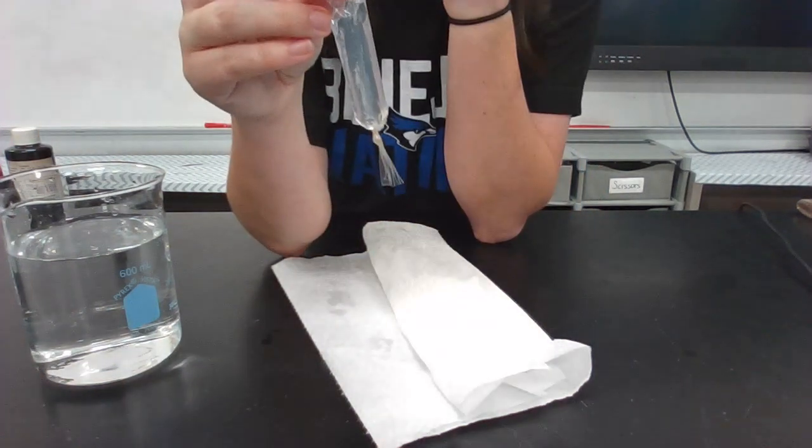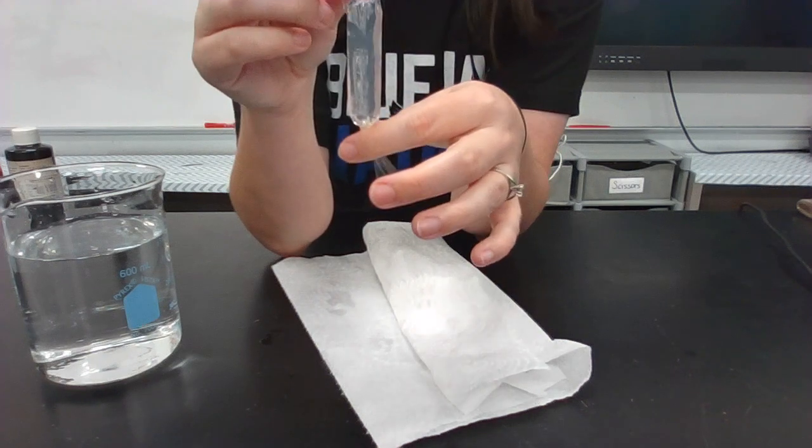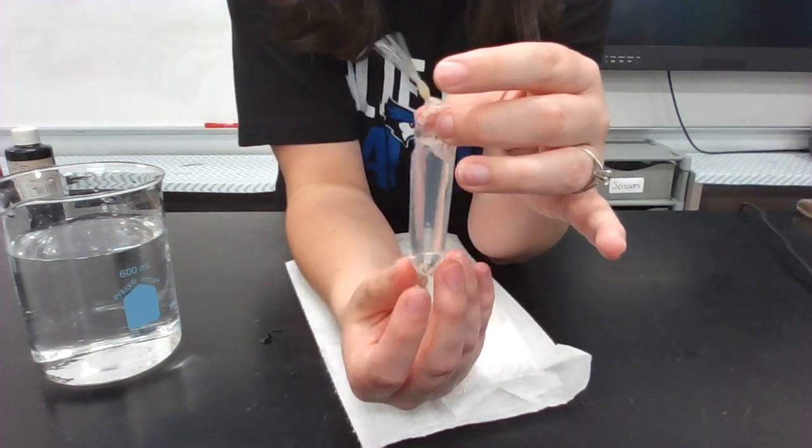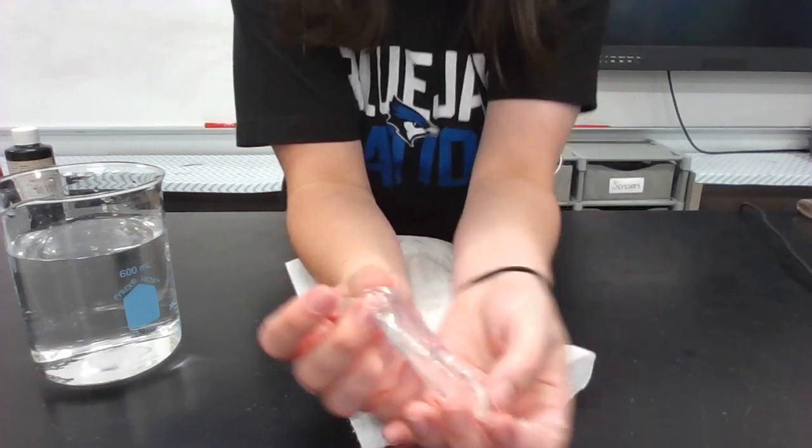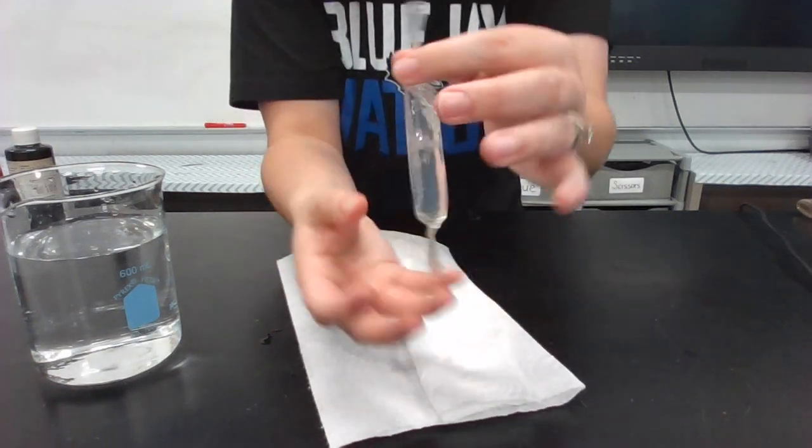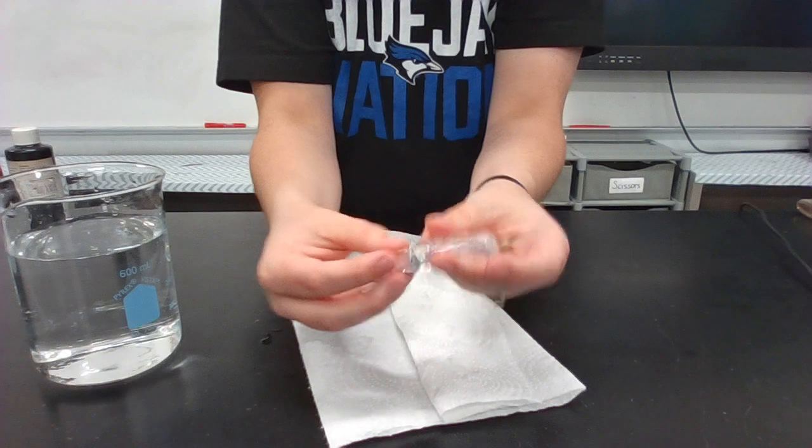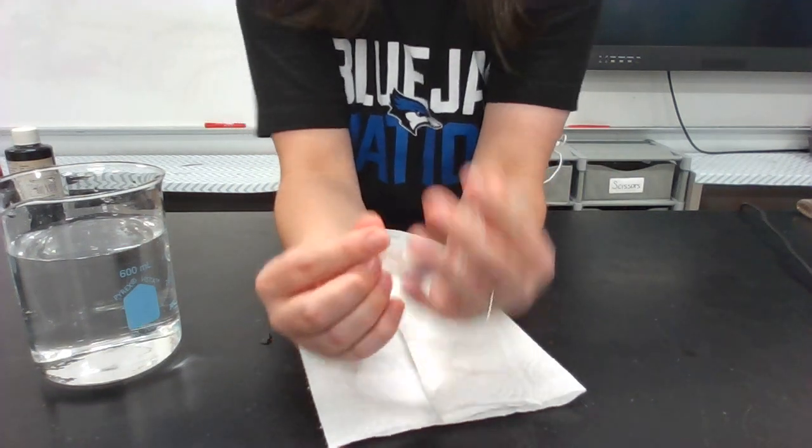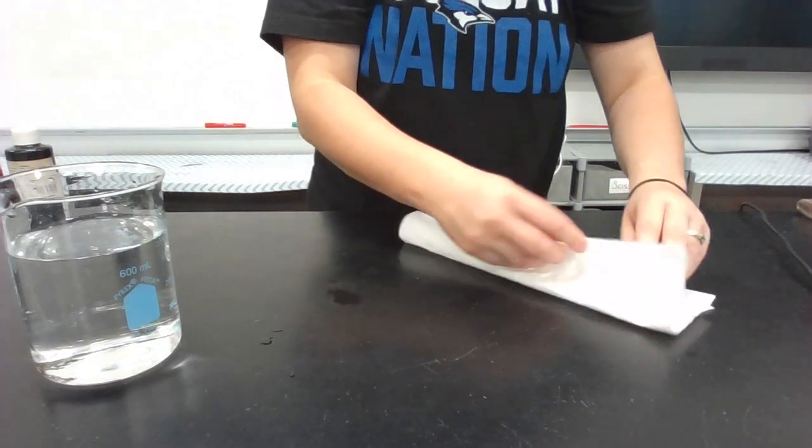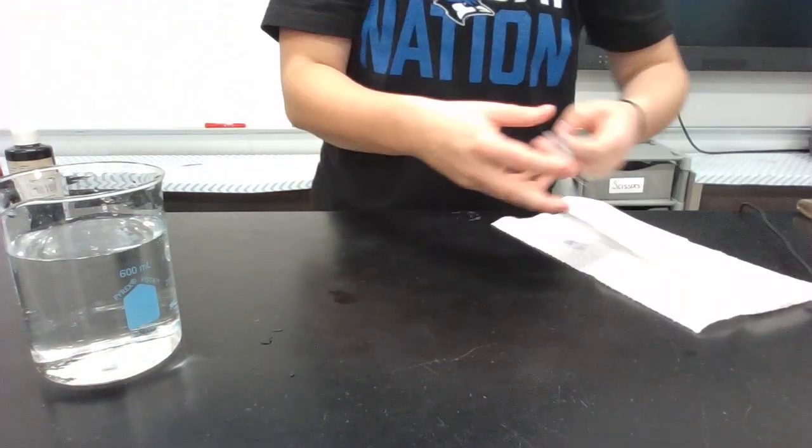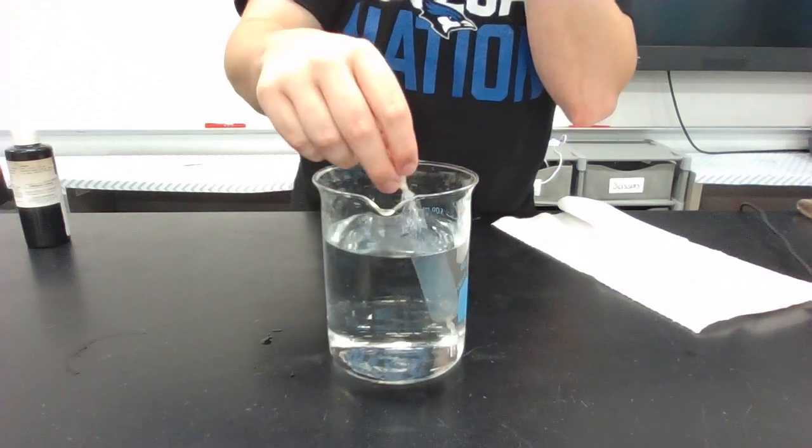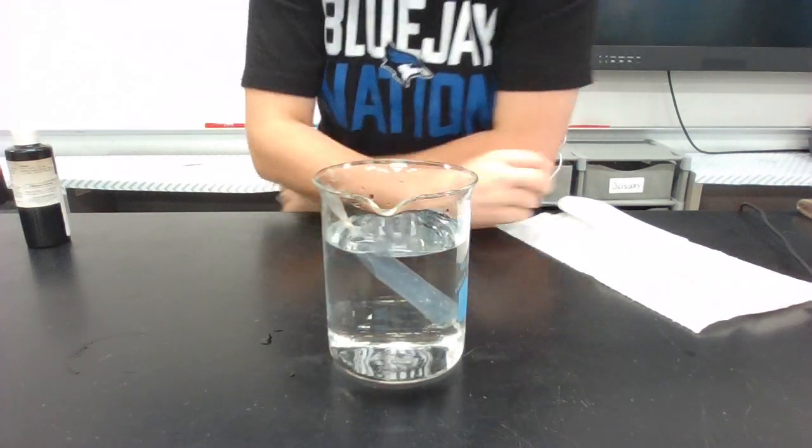So the pores that are in this tubing are so small that the stuff that makes up this starch solution, it's not going to leak. We can see that because we can shake it. We can even squeeze on it. The stuff inside is not going to come out. So now that it's all dried off, triple check, I'm going to take this and I'm just going to put it into my beaker of water and just let it float around there.